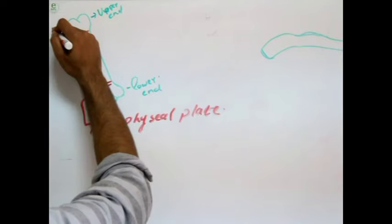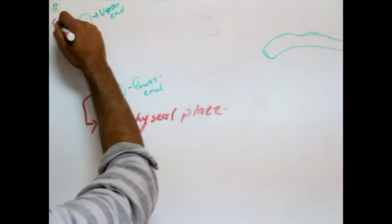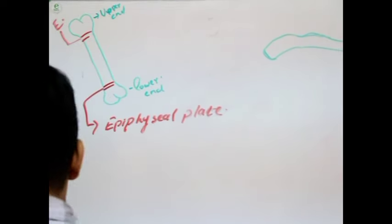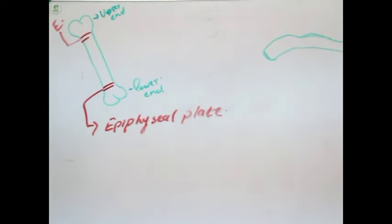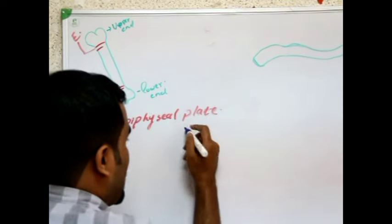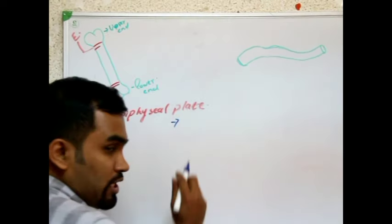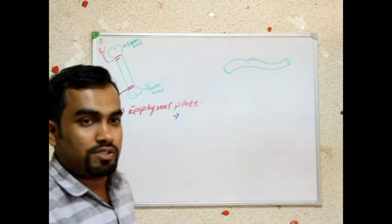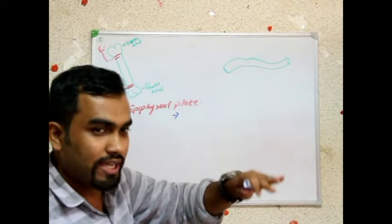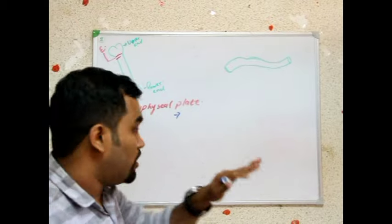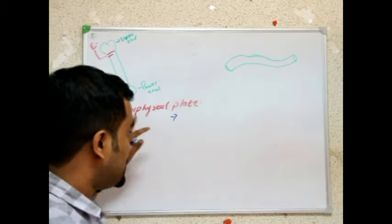Same here also — epiphyseal plate. This epiphyseal plate is the place where growth occurs; the increase in length of bone takes place in this plate.